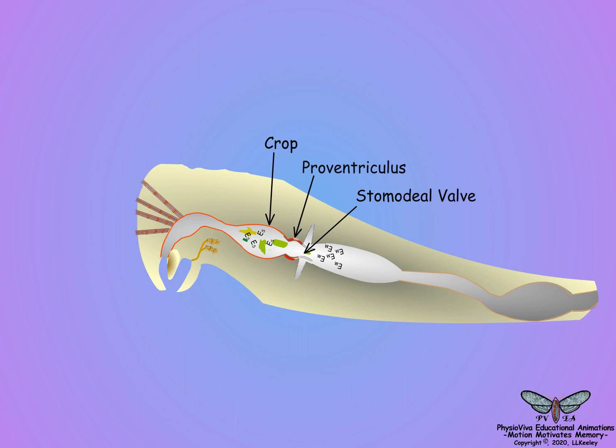Also, some midgut enzymes are regurgitated forward into the crop through the stomadial valve of the proventriculus. The stomadial valve controls food release from the crop into the midgut and prevents solid food movement from the midgut back into the crop, but allows liquids to move in both directions. Even though some digestion occurs in the foregut, the foregut cells serve no role in nutrient uptake.